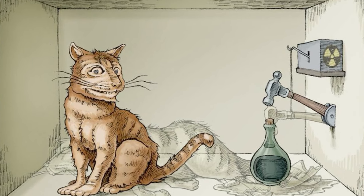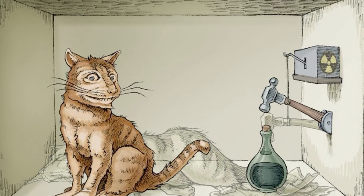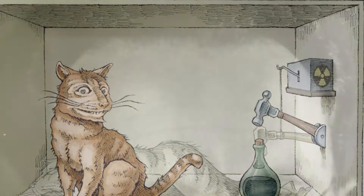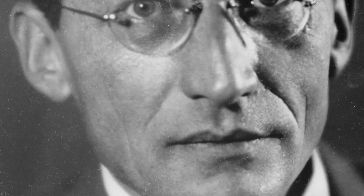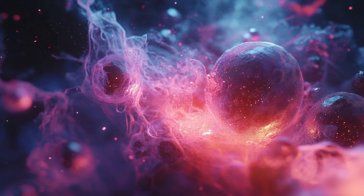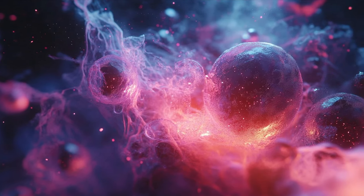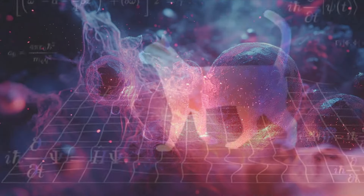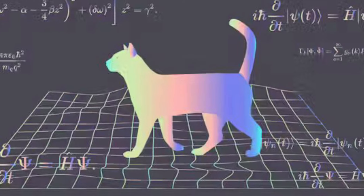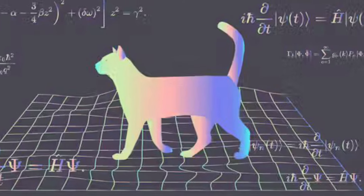Schrödinger's cat is a thought experiment proposed by Austrian physicist Erwin Schrödinger in 1935 to illustrate the nature of quantum mechanics, particularly the concept of superposition. The experiment involves a cat locked in a sealed box along with a radioactive substance and a poison-releasing mechanism.